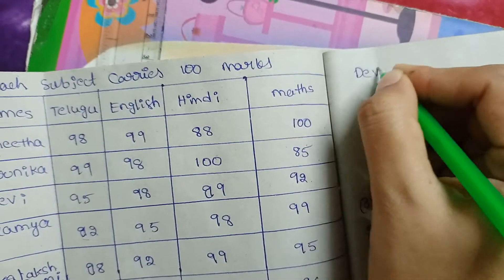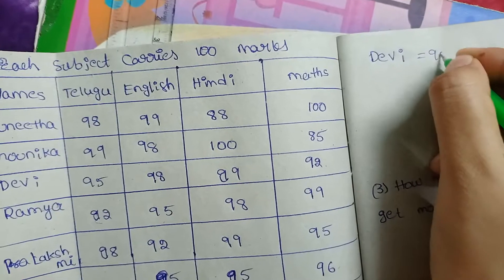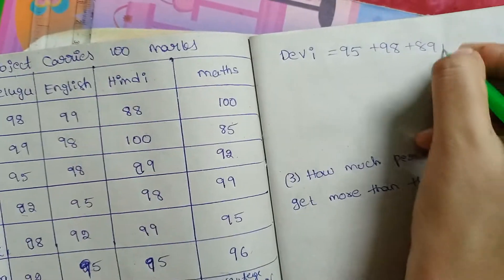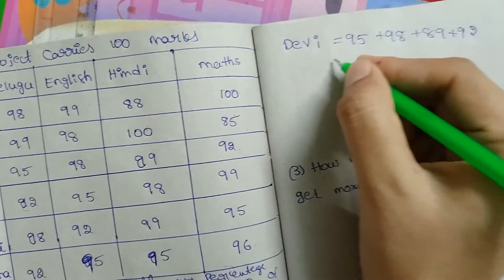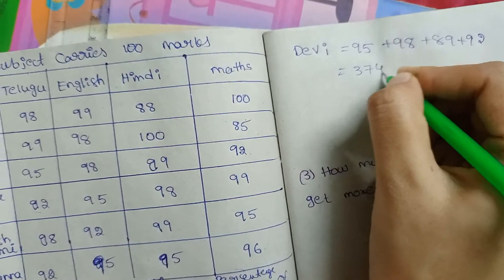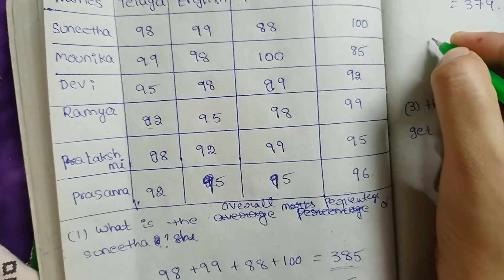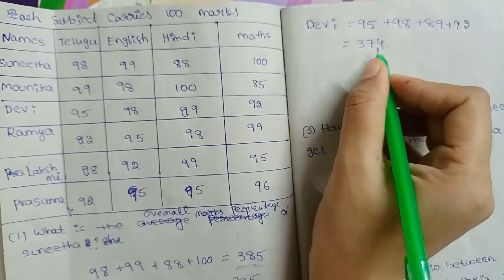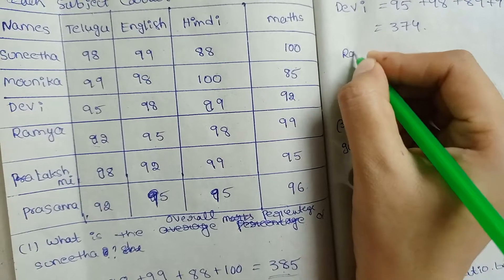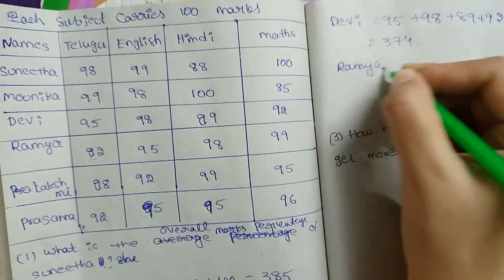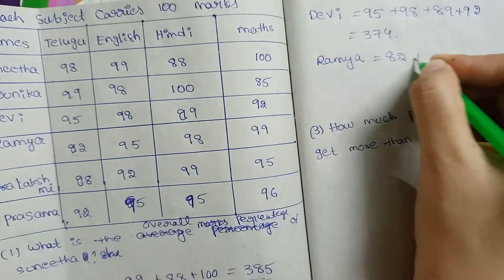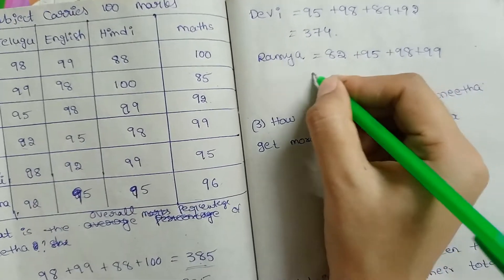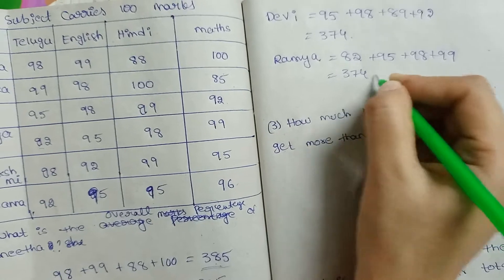Next, Devi. Devi's marks are 95 plus 98 plus 89 plus 92, giving a total of 347. Next, Ramya. Ramya's marks are 82 plus 95 plus 98, giving a total of 374.